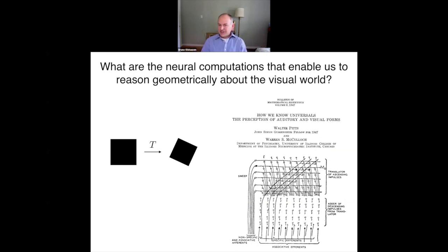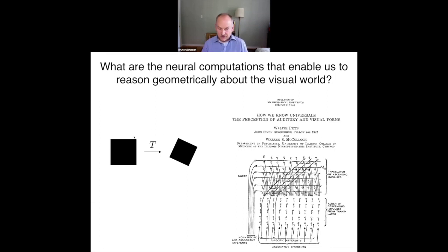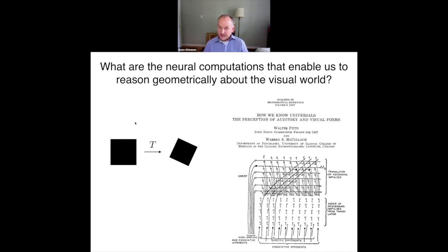The next question is: what's the neural machinery? What kind of neural computations allow these geometric manipulations? We can pose this simply with an example of a square seen in a different pose, scale, and orientation — we understand they're related by a transformation. If shown as a sequence, you would experience that transformation as apparent motion. This is fundamental to how we see the world — relating things to each other through transformations.